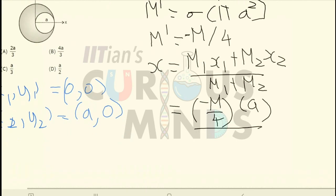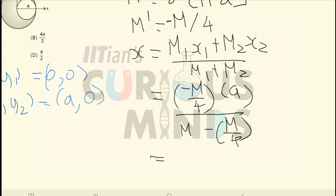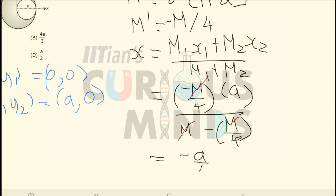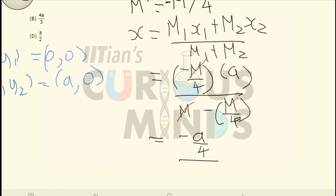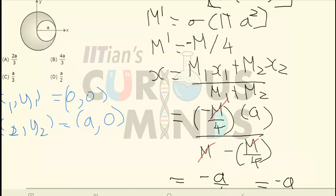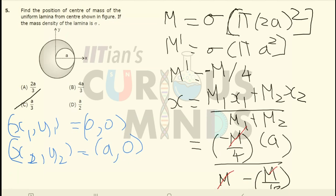Substituting the values, the distance is a, and the denominator becomes m minus m/4, which equals 3m/4. The m's get cancelled out, giving minus a/4 divided by 3/4, so the 4's cancel and it equals minus a by 3. The center of mass is at minus a/3, or the distance is a/3, which is option C.